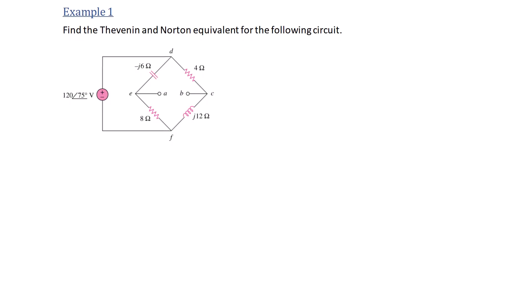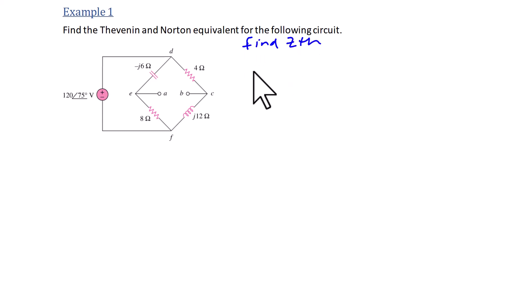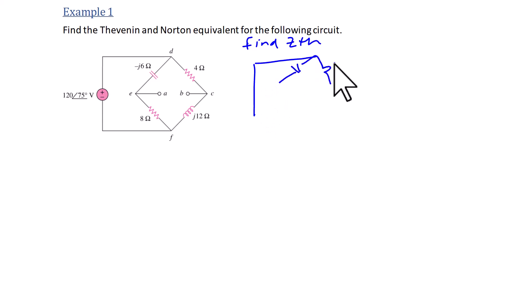Example 1: Find the Thevenin and Norton equivalent for the following circuit. The first thing we're going to do is turn off the voltage source and replace it with a wire, and now we're going to redraw the network of impedances so that we can find the equivalent impedance between terminals A and B, which will represent Z Thevenin as well as Z Norton.